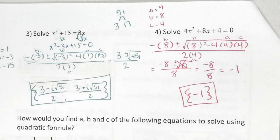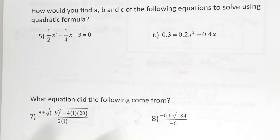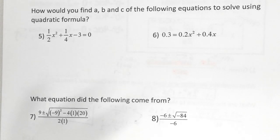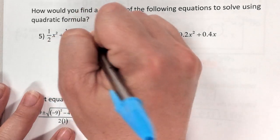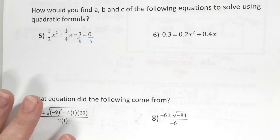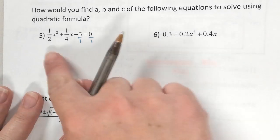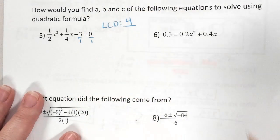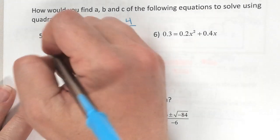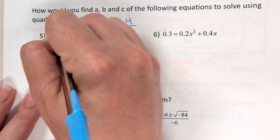For numbers 5 and 6 we're just going to talk about how to plug them in, not fully solve. For number 5, what's wrong? There are fractions. We don't want to plug fractions inside a fraction — it's not proper and it's a lot of extra work. The best thing is to get rid of the fractions first. To do that we need a common denominator. The biggest denominator is 4. Can 2 become 4? Yes. Can 1 become 4? Yes. So the least common denominator is 4.